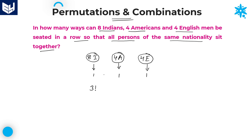But this is not the final result. Within the single entities, again, in the first single entity we have 8 Indians. 8 Indians can be arranged in 8 factorial ways. Similarly, we have 4 Americans within that single entity. 4 Americans can be arranged in 4 factorial ways. Coming to Englishmen, 4 Englishmen are there in this single entity and they can be arranged in 4 factorial ways. Therefore, our required answer is 3 factorial into 8 factorial into 4 factorial into 4 factorial.